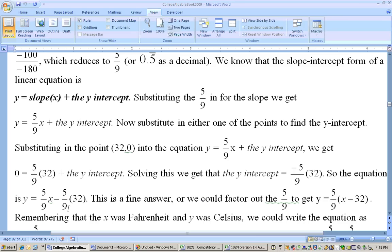So, the equation is y equals five ninths x minus five ninths times 32, and that's a fine answer, or you could factor out the five ninths out of this, and you'd be left with y equals five ninths times the quantity x minus 32, because there's a common factor of five ninths we can factor out.